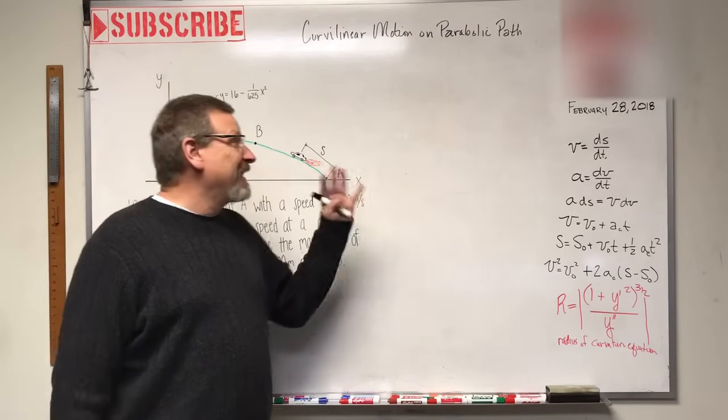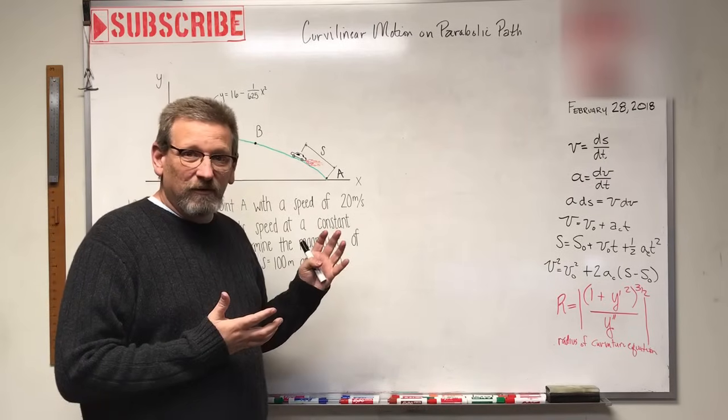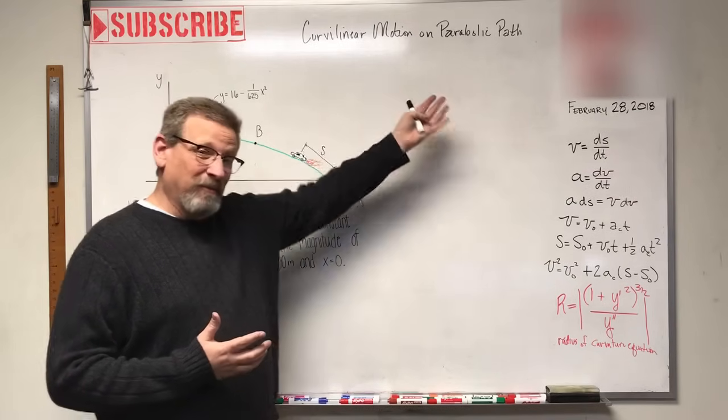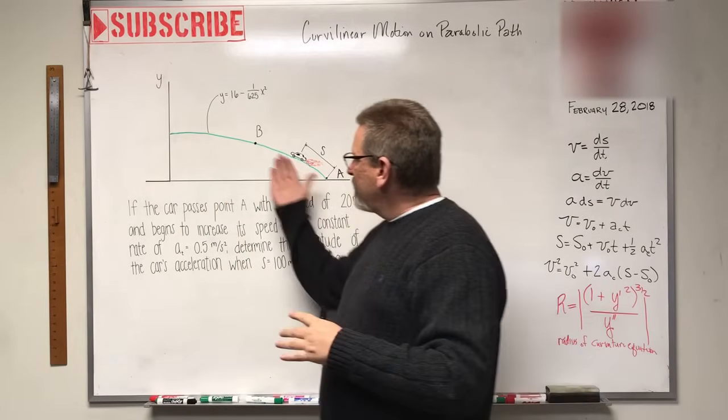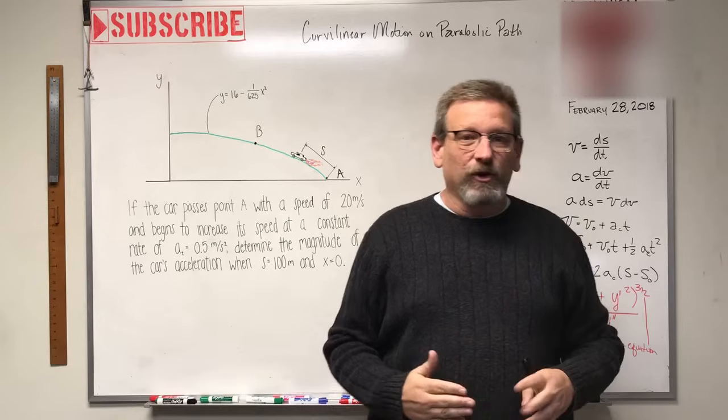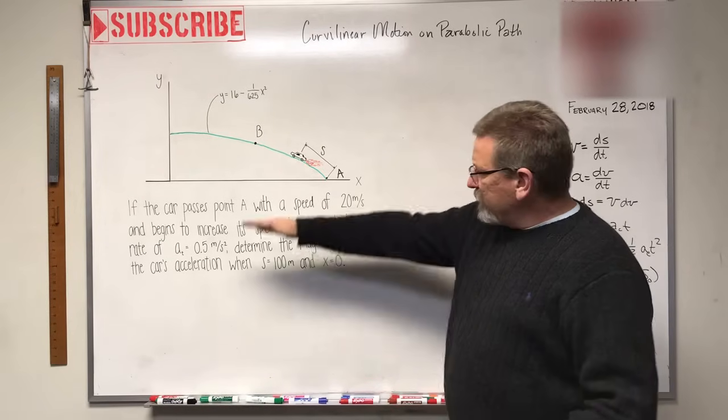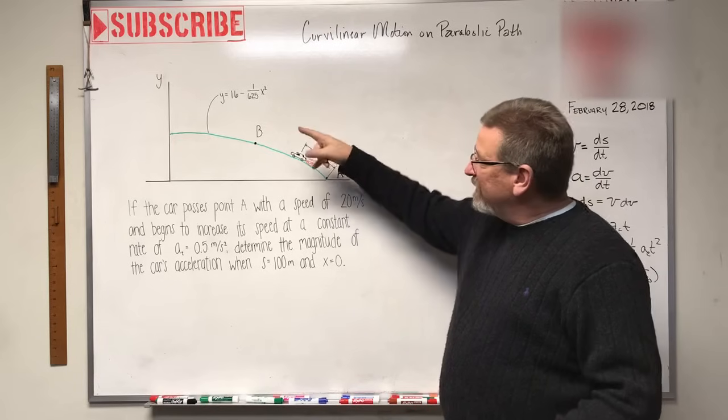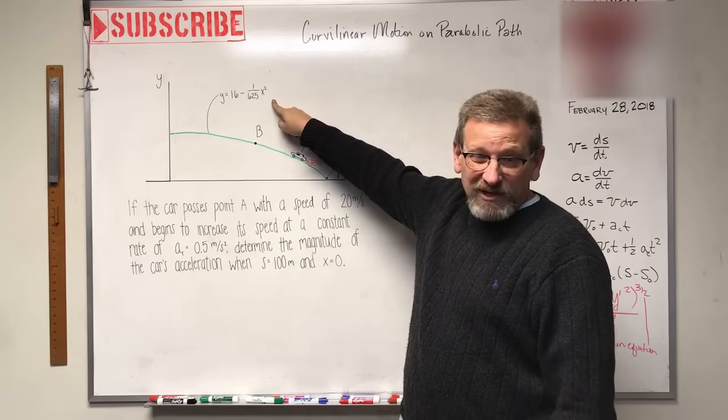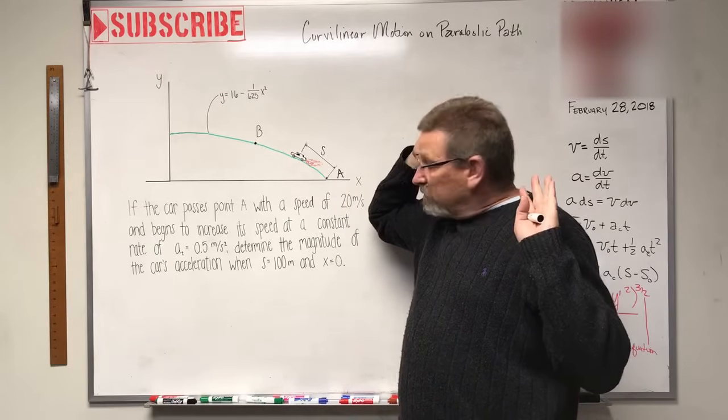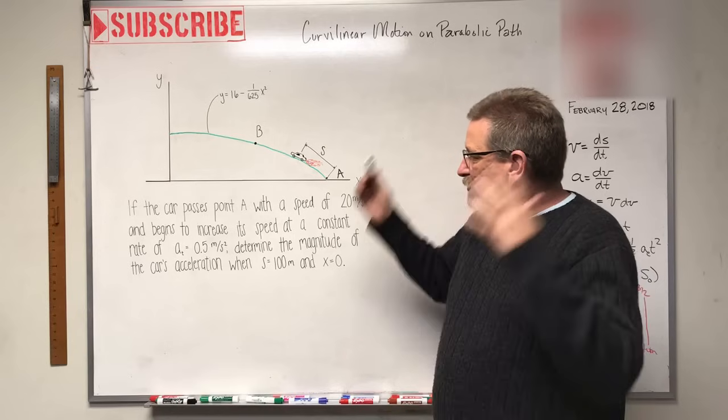Okay friends and neighbors, we're back talking about curvilinear motion again, but this time on a parabolic path. What happens when I have my object moving around a curved path where the radius of the curve is constantly changing - it's parabolic? We're gonna have to do a few things different. Let's see what this problem says.